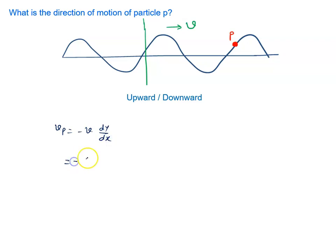Minus velocity is positive and dy by dx at this point P is also positive. Plus plus is plus, plus minus is minus.